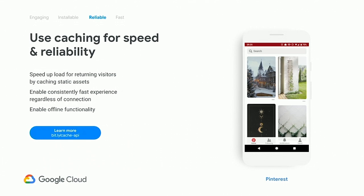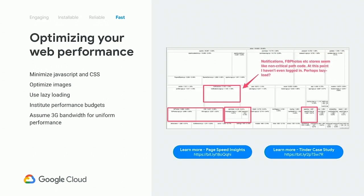We want to use caching for speed and reliability, speed up load time for returning visitors, ensure a consistent fast experience, and lay the foundation for offline. We also want to use lazy loading — starting to render the first parts of the page but working in the background to load things that don't need to be in front of the user immediately. This is an example from Tinder: they were loading a lot of images from places like Facebook before the user had even logged in. So rather than preloading all that content before login, you log in or create an account first, and load those images in the background so the user has a fast experience once they get through that first gate.